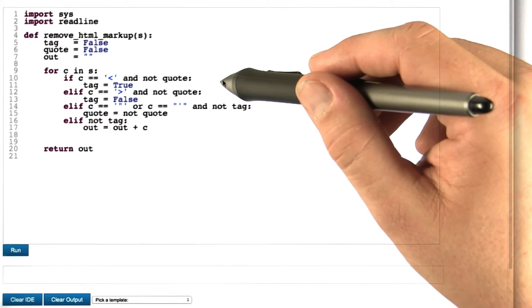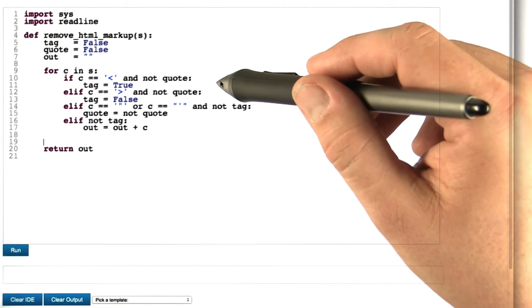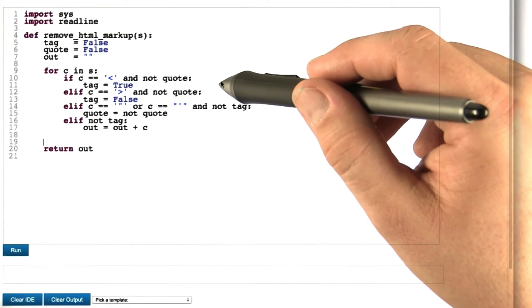Here as well, a simple assertion would have sufficed to catch the error, namely an assertion that checks for the non-existence of HTML tags in the output.